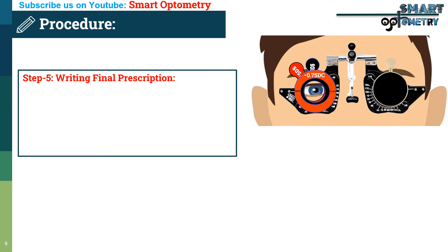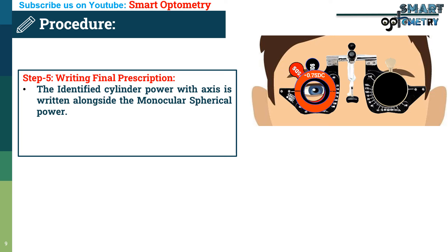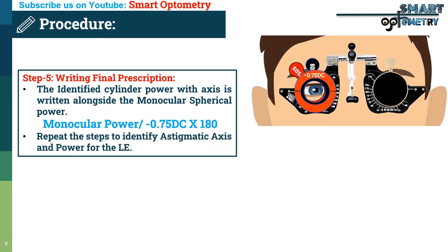Step 5: Writing the final prescription. The identified cylinder power with its axis is written alongside the monocular spherical power. For this patient, the final prescription will be the monocular spherical power plus minus 0.75 diopter cylinder at 180 degrees axis. Repeat the steps to identify astigmatic axis and power for the left eye.